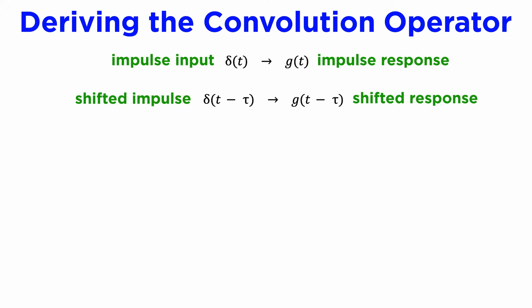If we instead delay our delta function input by some time tau, then our impulse response will also be delayed by tau, due to the property of time invariance. If we scale the magnitude of this impulsive force by some constant, which could actually be a function of our delay time tau, then this same constant will appear in the response due to linearity.